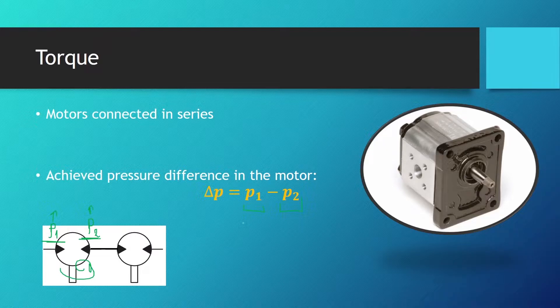So in the motor there is a drop in pressure which we can describe with this equation. The achieved pressure difference is equal to the pressure on the inlet side of the motor minus the pressure on the outlet side of the motor. Now we will derive the theoretical torque equation using the designations on this picture. All of these chambers — made up of the sides of the teeth, the casing, and the teeth base — are chambers in which the fluid is trapped and transferred to the outlet side of the motor.